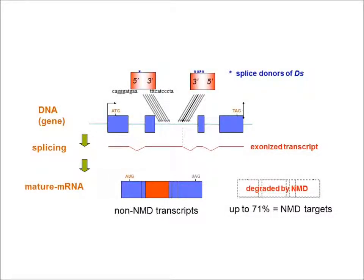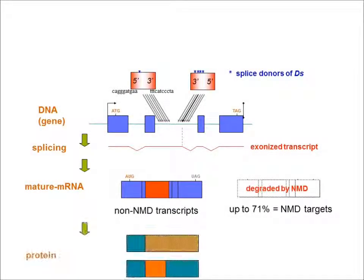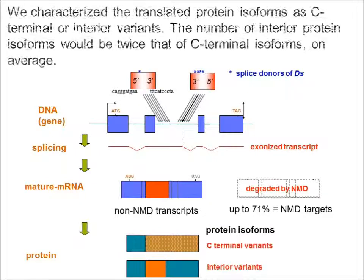For those non-NMD transcripts, we characterized the translated protein isoforms as C-terminal or interior variants. The number of interior protein isoforms would be twice that of C-terminal isoforms on average.